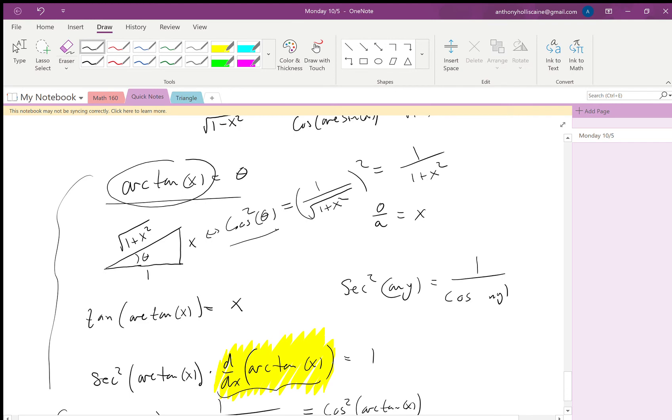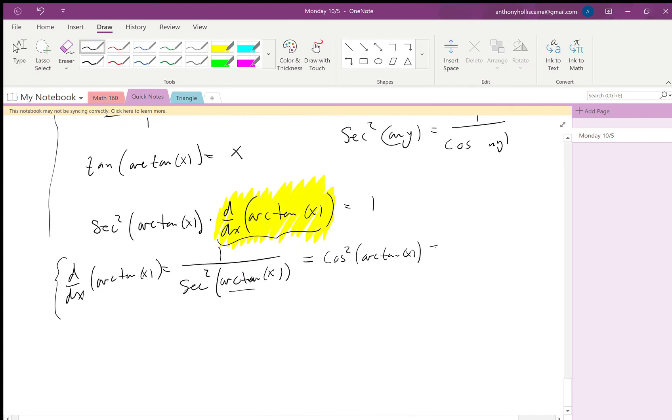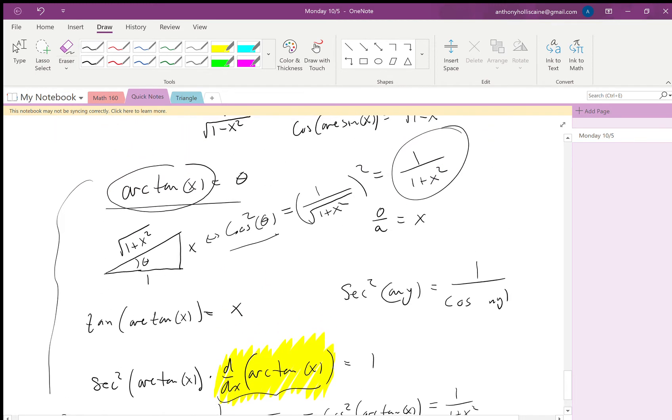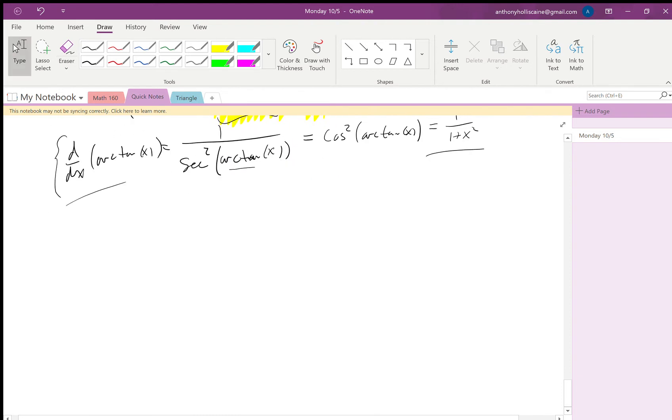So I come up here, cosine squared of arc tan x is 1 over 1 plus x squared. So I have 1 over 1 plus x squared. Okay, there we go. So derivative of arc tangent x equals this.